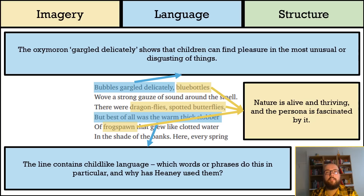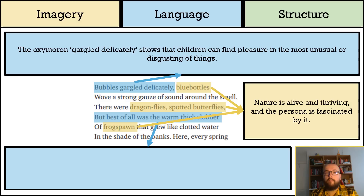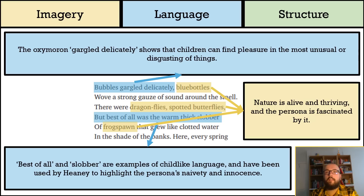I've counted the references to nature as images here, because they all evoke a powerful picture in my mind. We've all seen blue bottle flies and so on before, and so just by mentioning them, they put images into our minds as readers. By including such a high number of nature images in such a short space, Heaney creates a high image density. The childlike language highlights the persona's naivety and innocence, and is evidenced by 'best of all' and 'slobber'.